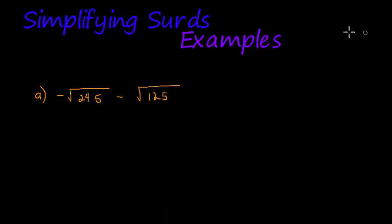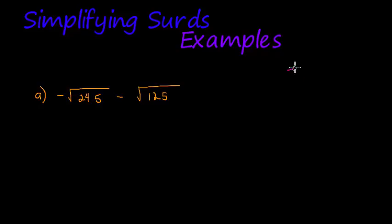Hi there everyone, welcome to this video where we're looking at examples on how to simplify surds without using your calculator. Doing it with a calculator is very easy, but doing it without a calculator takes a little more effort. Now, if I want to add any two expressions they have to be of the same kind. Here I've got a square root of 245 minus a square root of 125 — I can't subtract these because they are not of the same kind.